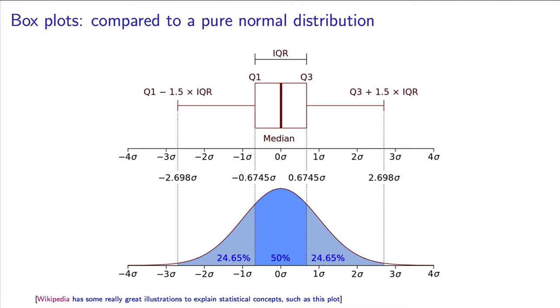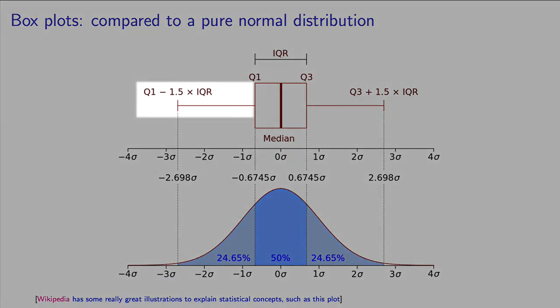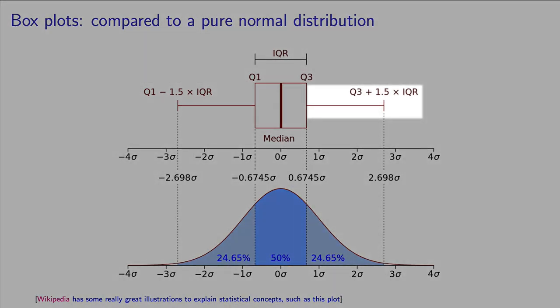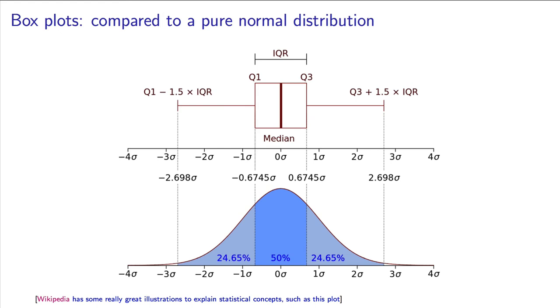Two fences are always shown. The first fence is calculated at quartile 1, minus 1.5 times the IQR. You can see it over here. The second fence is on the other side, at quartile 3, plus 1.5 times the IQR. Fences are calculated values, so they are hypothetical boundaries.